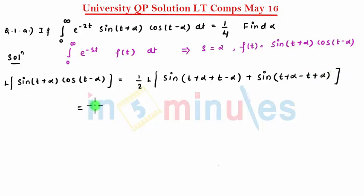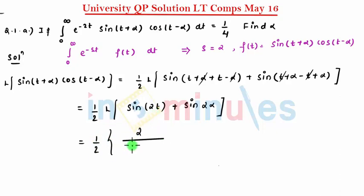So we can say this as 1 divided by 2 Laplace of sin 2t, alpha and alpha gets cancelled. Then sin t and t gets cancelled, you get 2 alpha. So we can say this as 1 by 2, Laplace of sin 2t is 2 divided by s square plus 4, plus sin 2 alpha is a constant.